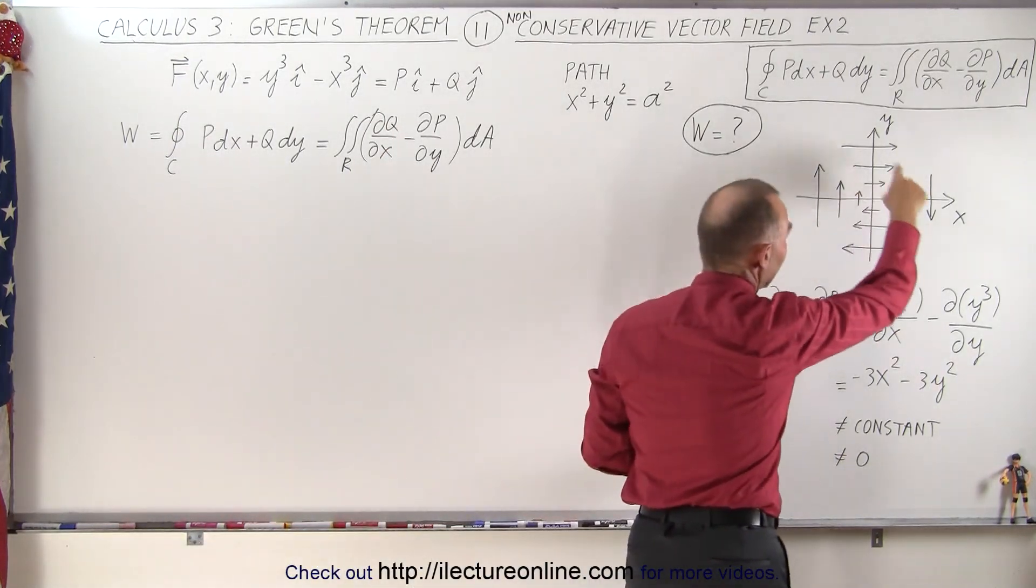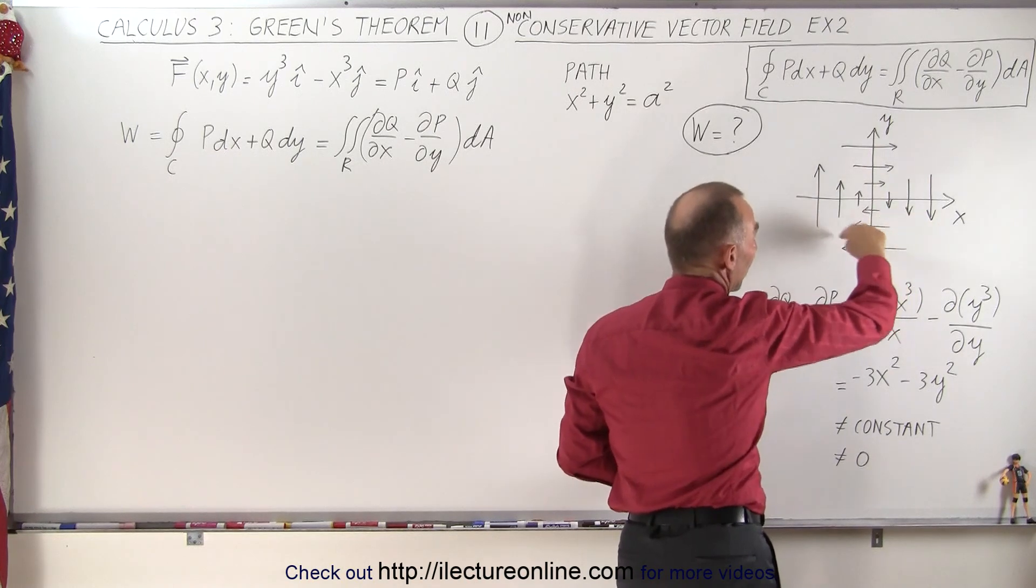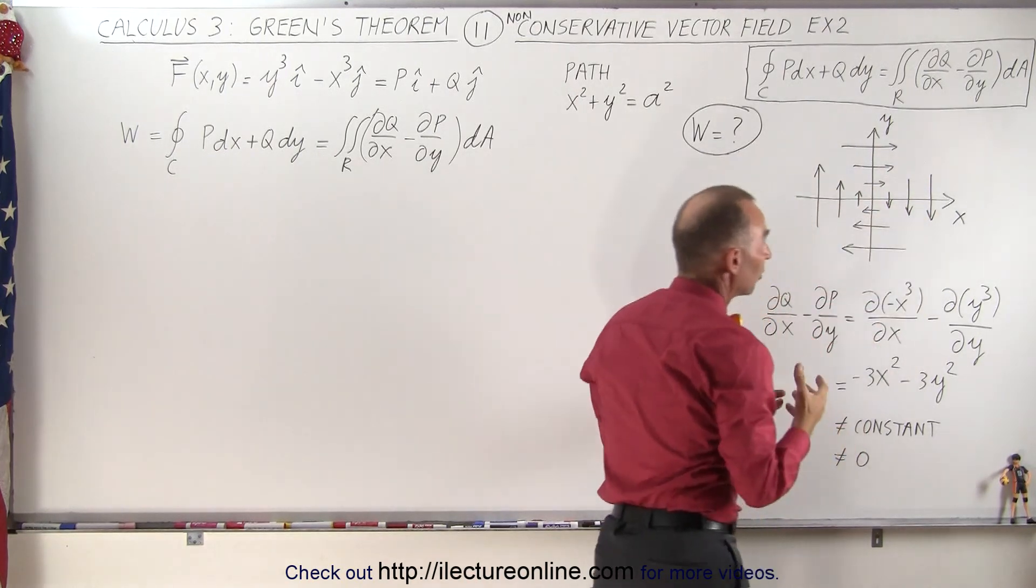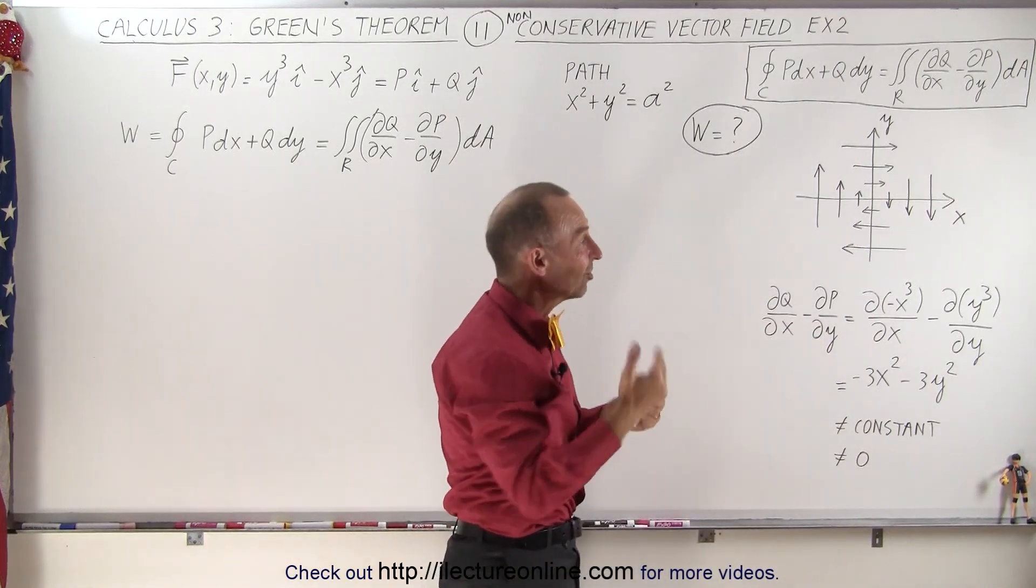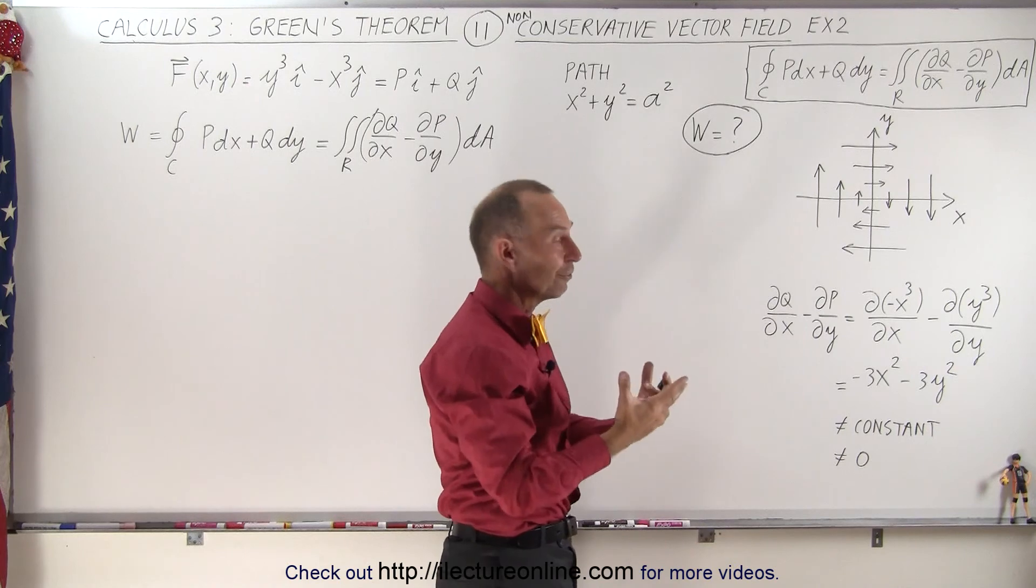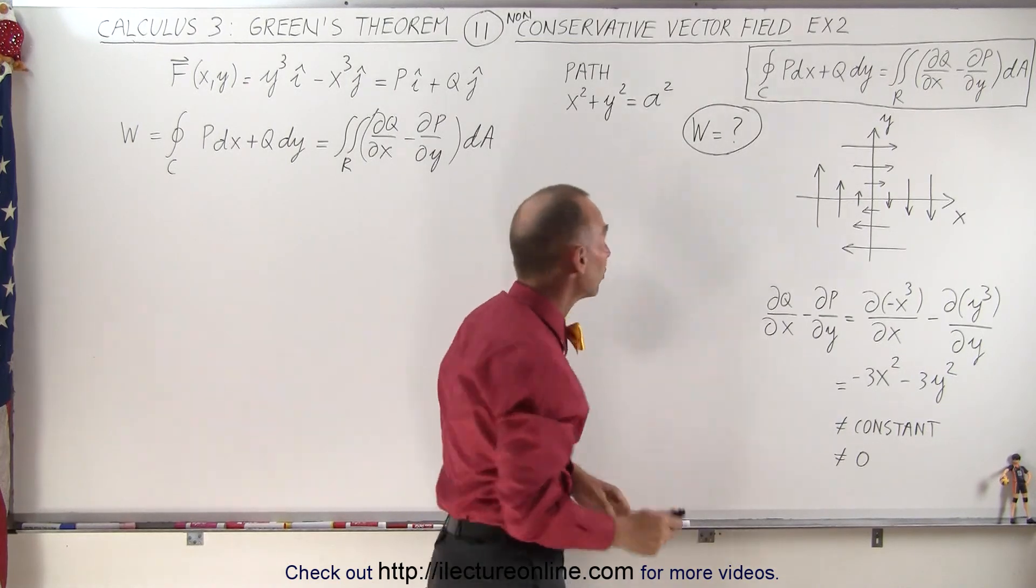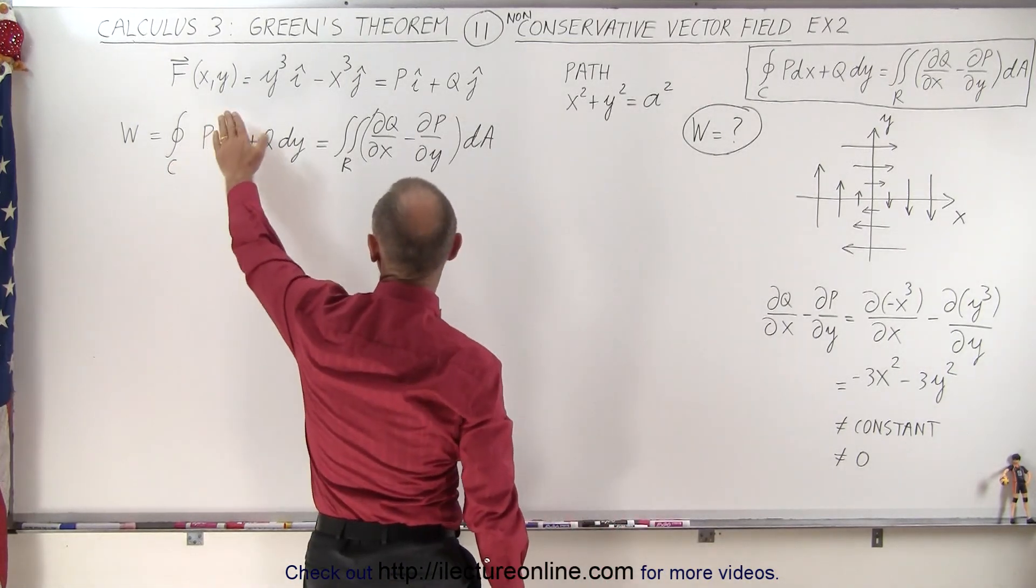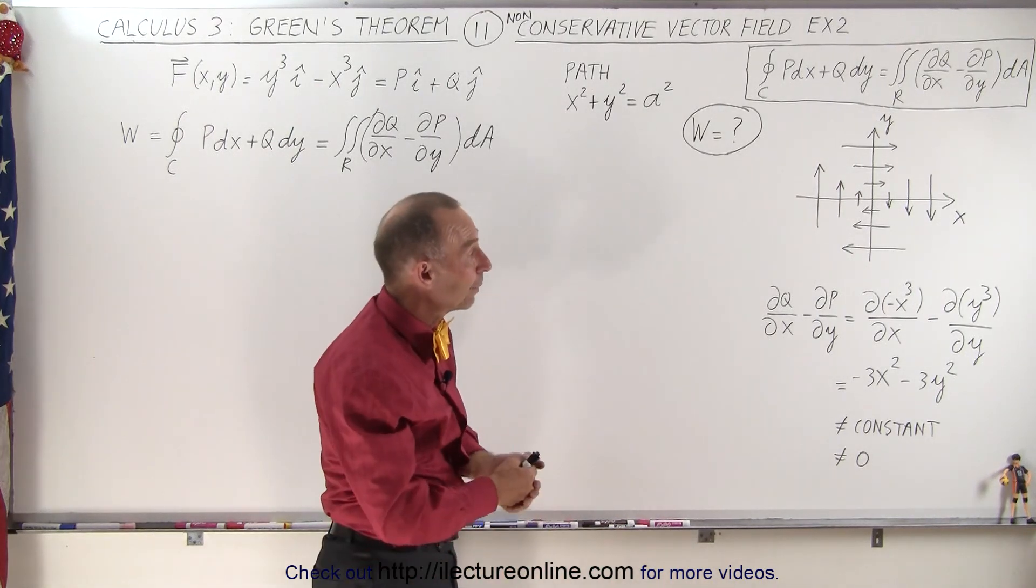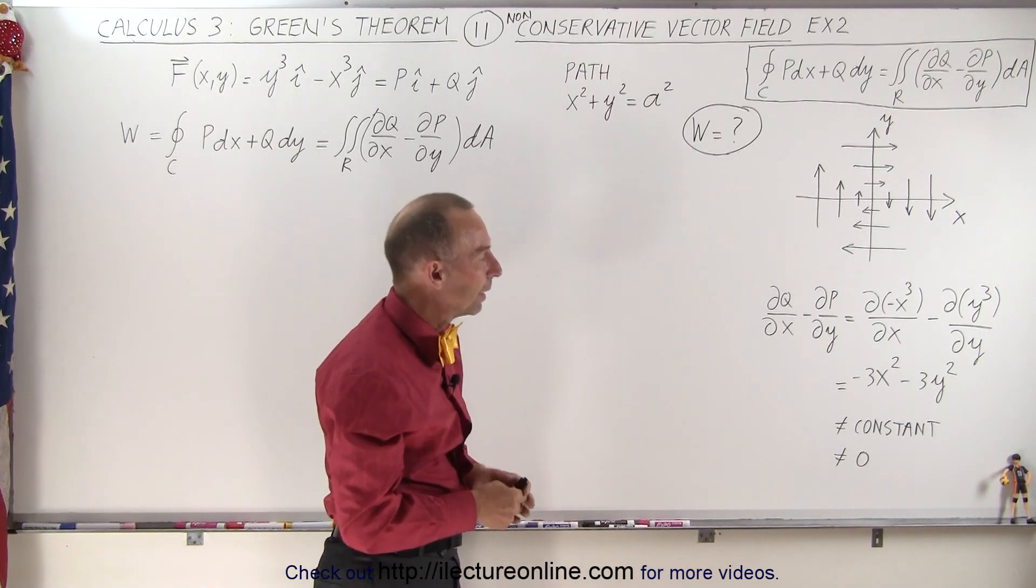And notice that if we go around a complete circle, either in a clockwise or counterclockwise direction, you see the arrows always point in the same direction or always point in the opposite direction of the motion, and therefore you'll get a non-zero result. In other words, work done through that vector field, if that vector field represents a force, will be non-zero.